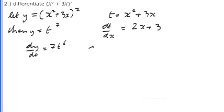Using our chain rule for dy/dx, dy/dx is equal to dy/dt multiplied by dt/dx.